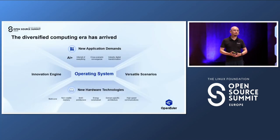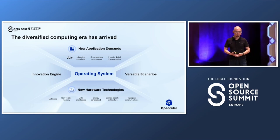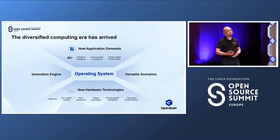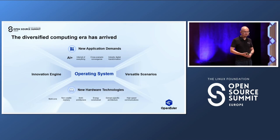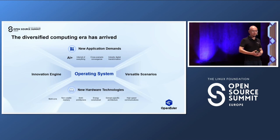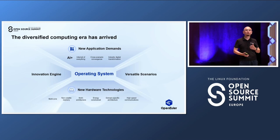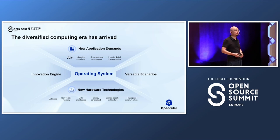A lot of things have happened in the industry in the past few years. We see a lot of new hardware technologies emerging, especially the rising of domain-specific architecture, which is quite attractive to all of us. We also see a lot of new application demands because AI has made huge success, and that really impacts almost every area, from the internet of everything to industry transformation. We see that diversified computing has arrived. What we need is a platform to support all these versatile scenarios and to be an innovation engine to support and implement all these new requirements from both hardware and application. That's why we started to build openEuler.